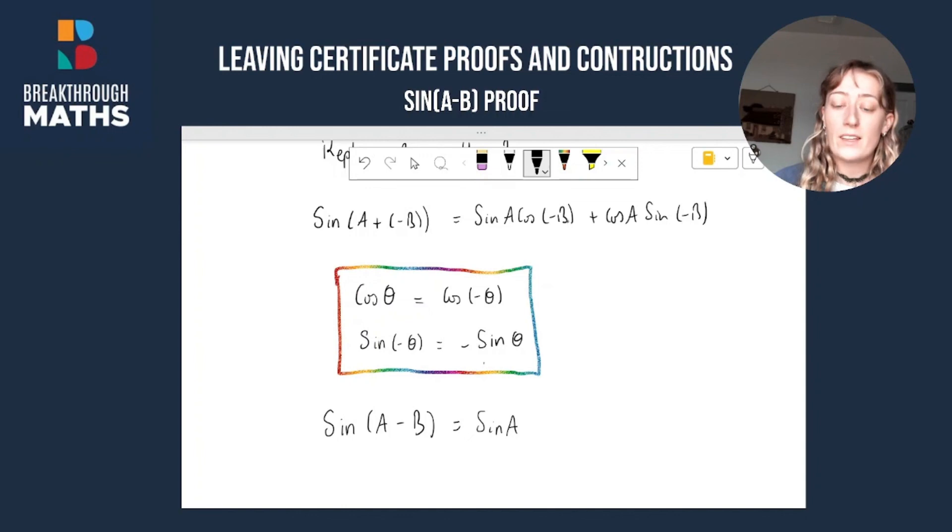Cos of minus B, we just said that's the same as saying cos B. We've got a cos A. A sine of minus B is the same as saying minus sine B. This plus turns into a minus, minus B. And we put our sine B here. And there you have it.